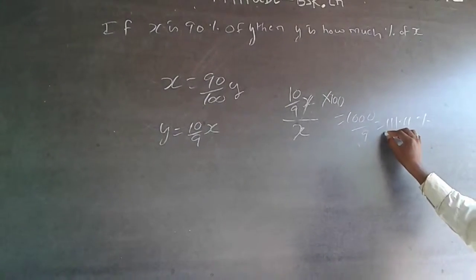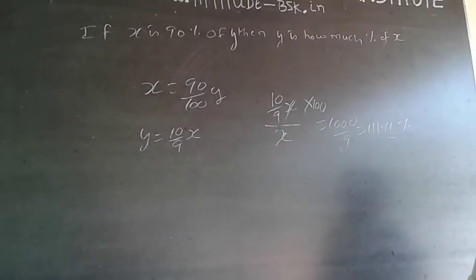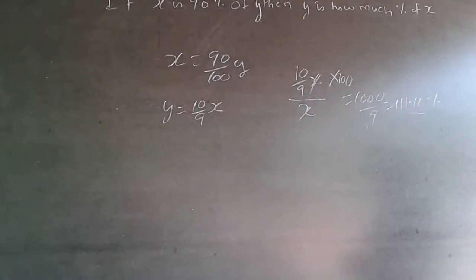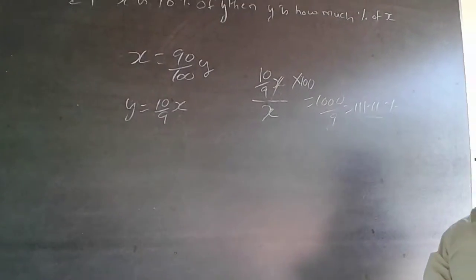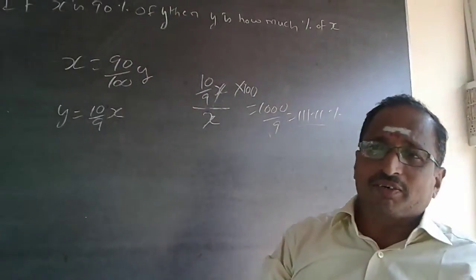Always, whenever it is never-ending decimals like this, stop at 2 decimal points because you follow the 2 decimal system. Subscribe to my channel, I will be adding questions later on. Thank you.